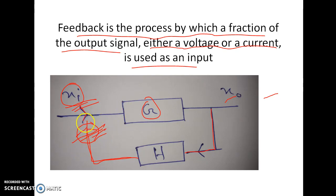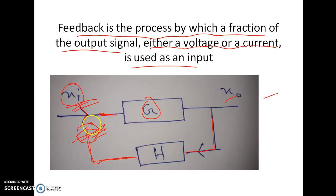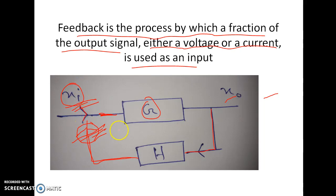But if we reverse the feedback signal — that means take a 180 degree phase shift of the signal — and then add it with the input signal, that means subtraction: XI minus feedback signal is present in this portion. Dependent on this, feedback is classified into two major parts: negative feedback and positive feedback. If we take 180 degree phase shift — or reverse the signal, or take the opposite sign of the feedback signal with respect to the input — and then add these two, that is called negative feedback.